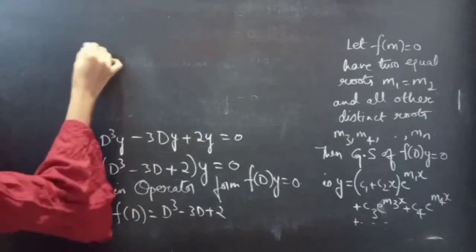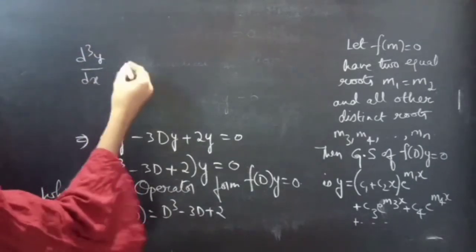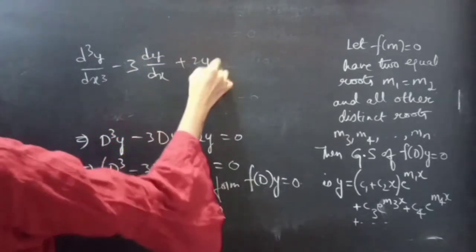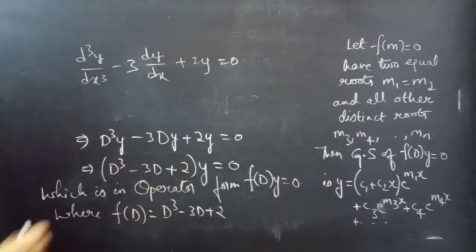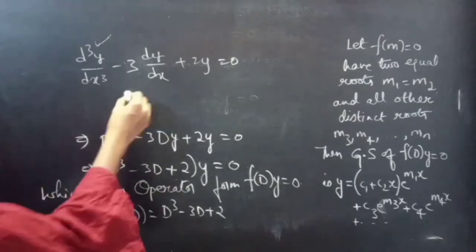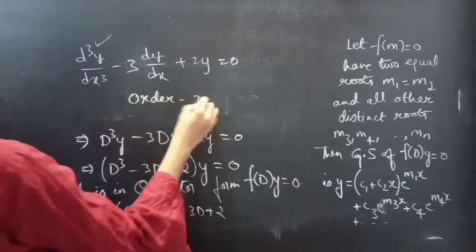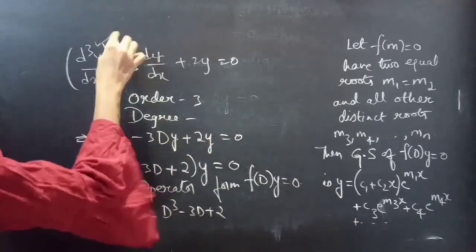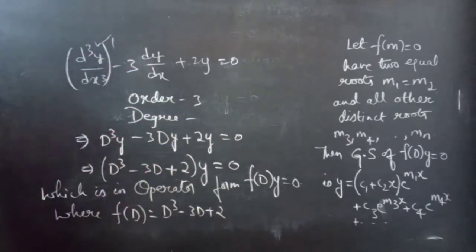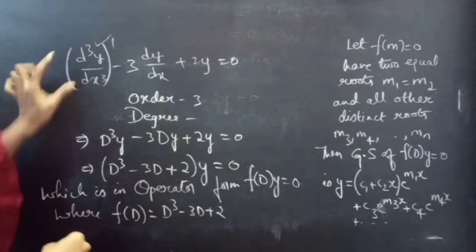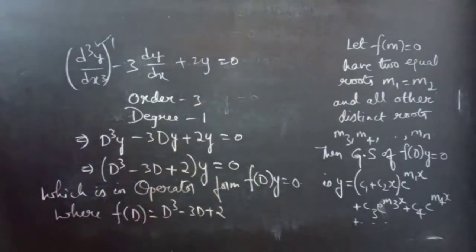We need to write the order and degree of the given equation. The highest derivative is d cubed y by dx cubed, so the order will be 3. The degree is the highest power of the highest derivative, which is 1. So our degree is 1.